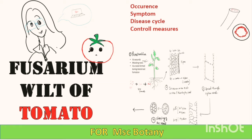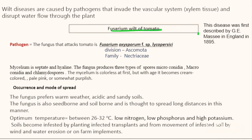Fusarium wilt of tomato was first described by G.E. Messe in 1895 in England. This disease is caused by a fungal pathogen named Fusarium oxysporum. The full name of the fungi is Fusarium oxysporum subspecies lycopersicae — Fusarium is the genus, oxysporum is the species, and lycopersicae is the subspecies. This fungi is a member of Ascomycota and of the family Nectriaceae.